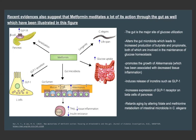Metformin also promotes the growth of an intestinal bacteria, Akkermansia, which has been associated with decreased tissue inflammation and has also been known to improve the metabolic profile of diabetic patients. It also induces the release of incretins such as GLP-1 and increases the expression of their receptors. Incretins are important peptides which are involved in glucose homeostasis.